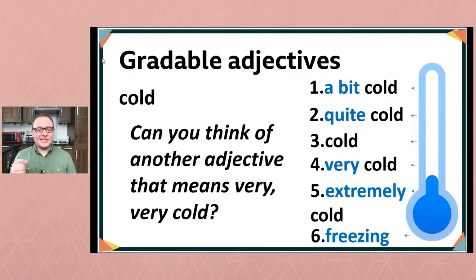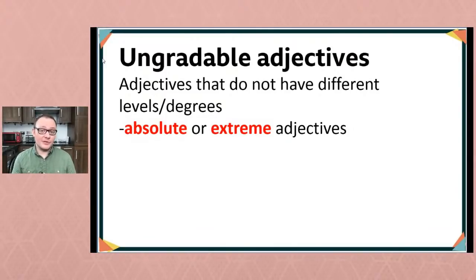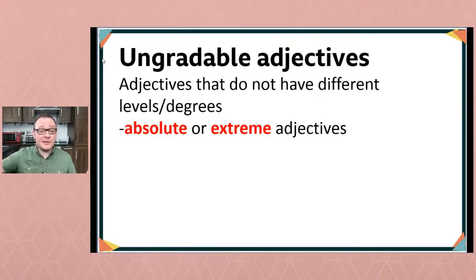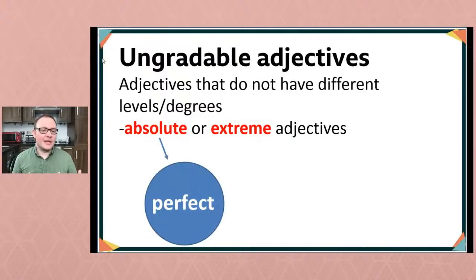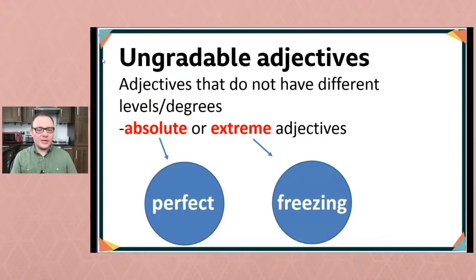So this is our first example of what we call an ungradable adjective. These are adjectives that do not have different levels or different degrees, and they come in two types. There are absolute adjectives — things like 'perfect,' where something is either perfect or it's not; there's no middle ground. And we also have extreme adjectives, like the one we've just learned: freezing.